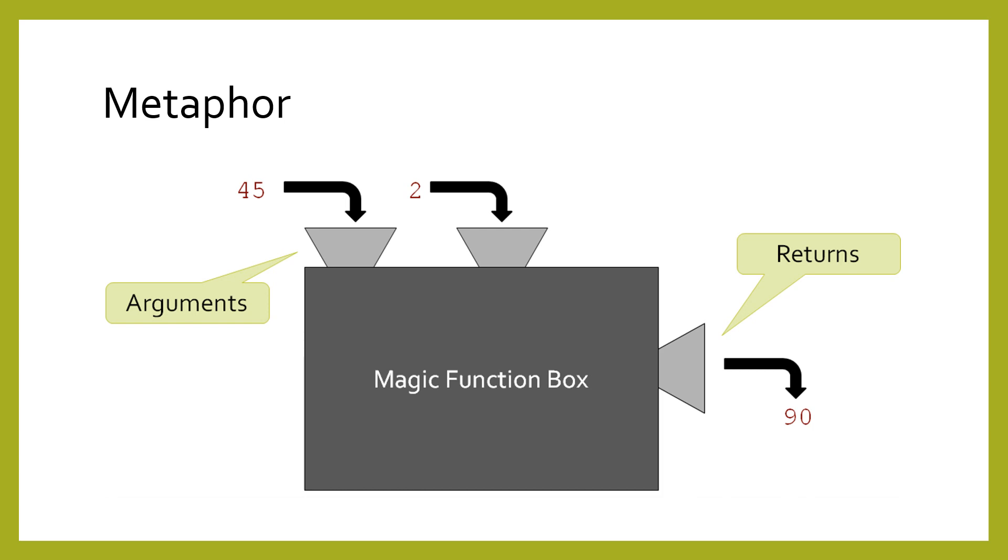Think of a function as a magic black box. You cannot see inside the box to know how it works, but you don't need to. Arguments are the knobs and dials on the outside of the box that let you control its working. Returned values are like a slot that dispenses the results of the function.